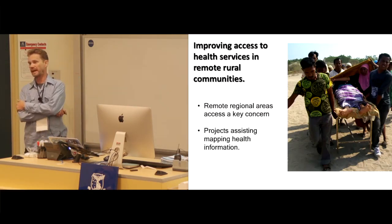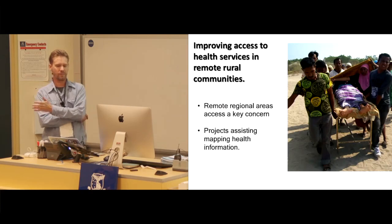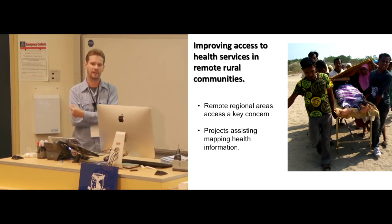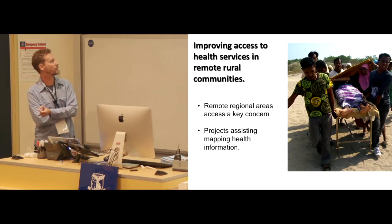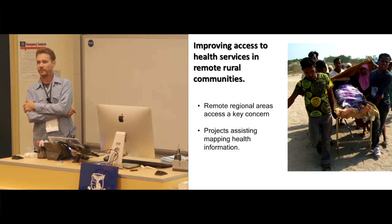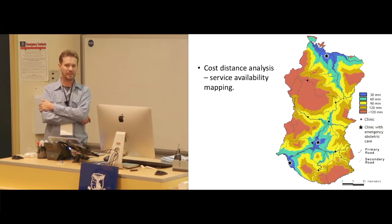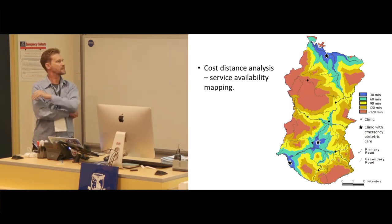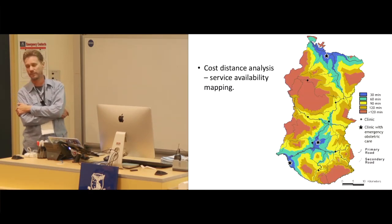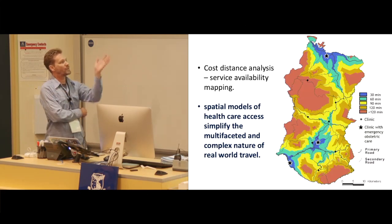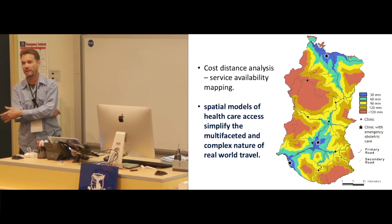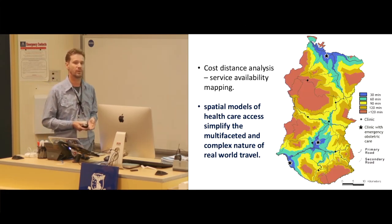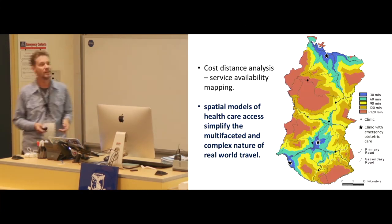Another area I've worked in extensively in Eastern Indonesia is access to health services — particularly issues around maternal deaths, women dying during childbirth. The World Health Organisation suggests you need to be within two hours of emergency obstetric care during childbirth, which is a major concern in underdeveloped areas of Eastern Indonesia. Using standard cost distance analysis raster tools we can produce maps showing areas more than two hours from healthcare — these areas in red in Central Flores. But access to healthcare is a complex social and cultural story, not just a map — we need to incorporate local knowledge about the inhibitors beyond travel time.